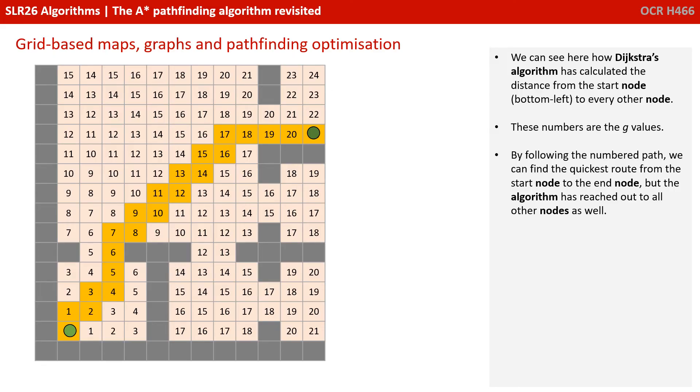We can see here how Dijkstra's algorithm has calculated the distance from the start node, bottom left, to every other node. The numbers here are the g-values. By following the numbered path, we can find the quickest route from the start node to the end node, but the algorithm has reached out to all the other nodes as well.